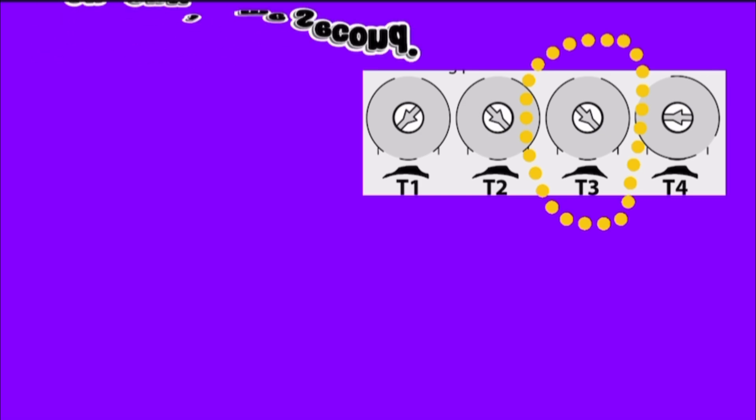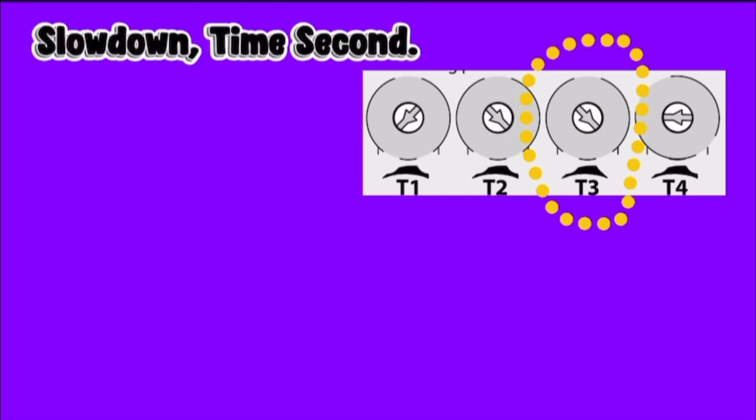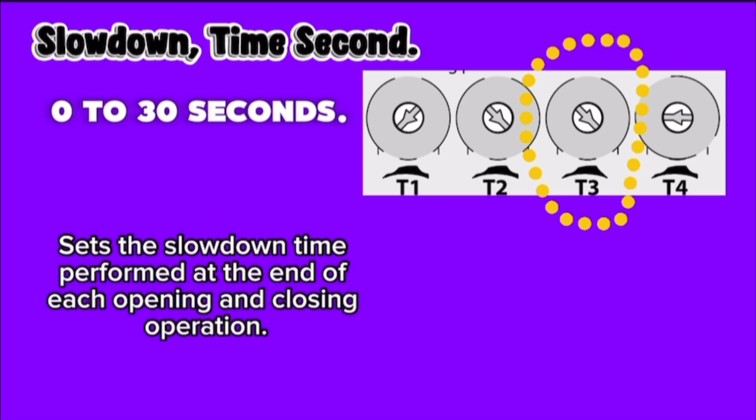T3, slowdown time in seconds. The time is 0 to 30 seconds. Sets the slowdown time performed at the end of each opening and closing operation. Zero means slowdown is disabled.